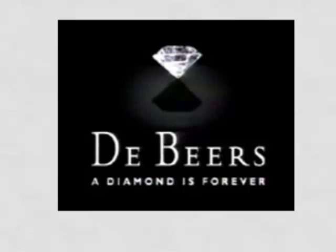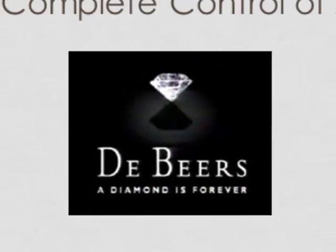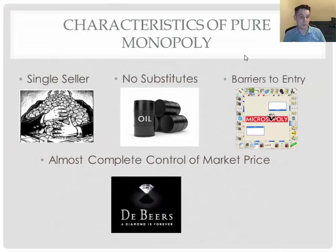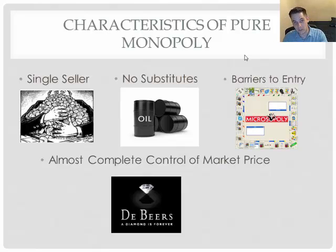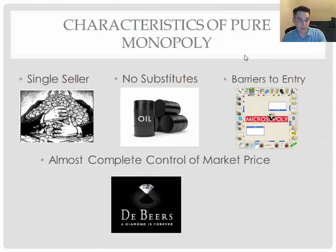They could jack up the prices of diamonds so that diamonds cost more than rubies, even though rubies are naturally much more rare. That is one of the reasons why our country tries to fight monopolies, but they can only fight monopolies in our own country. De Beers is an international company, and America is very limited in what it can do to companies not based in America.